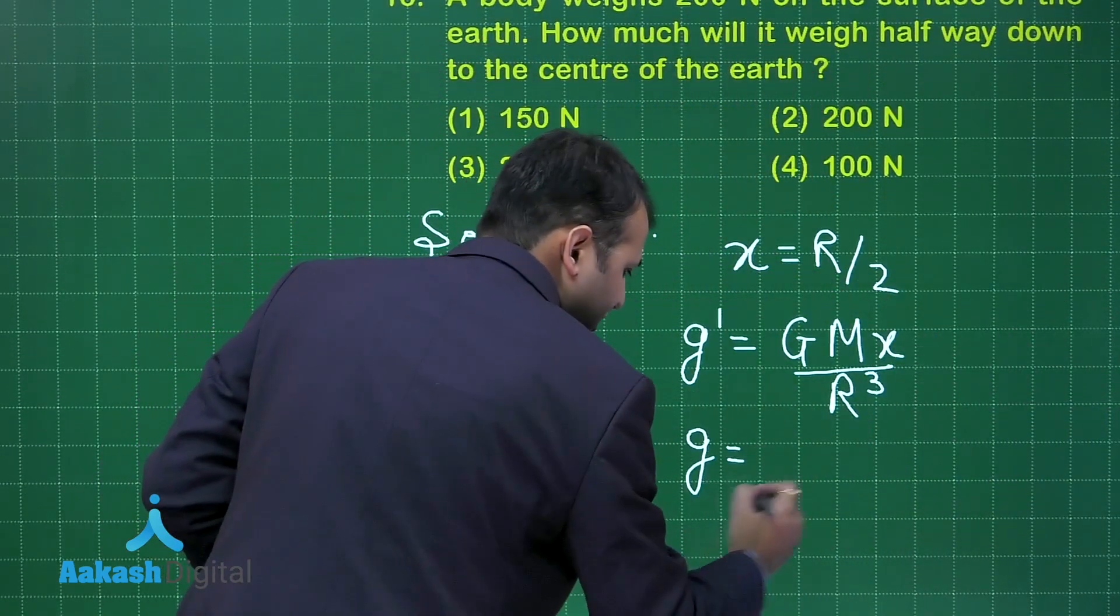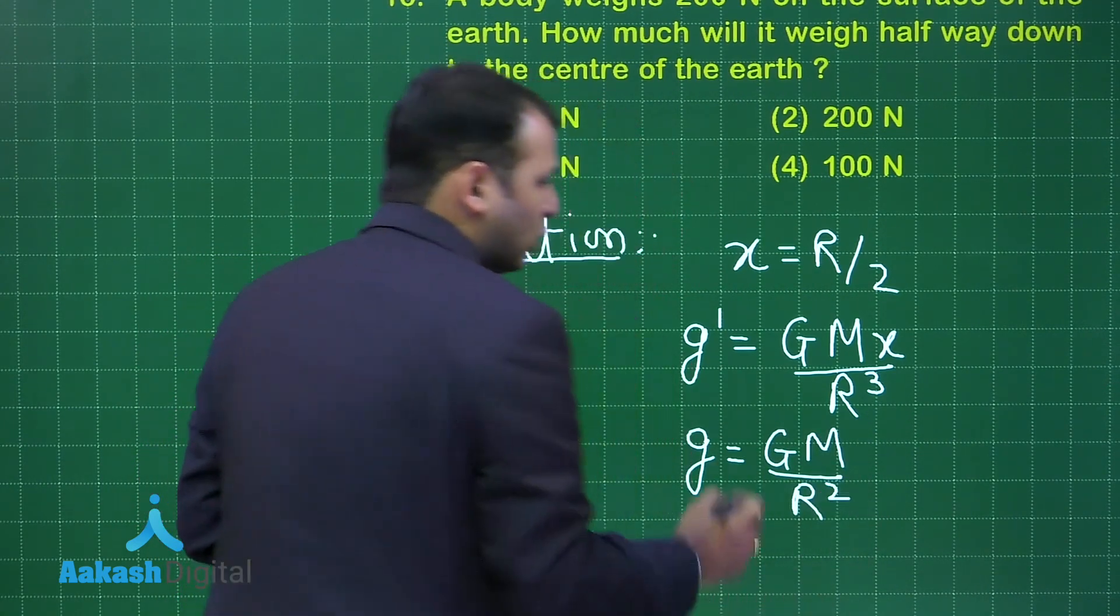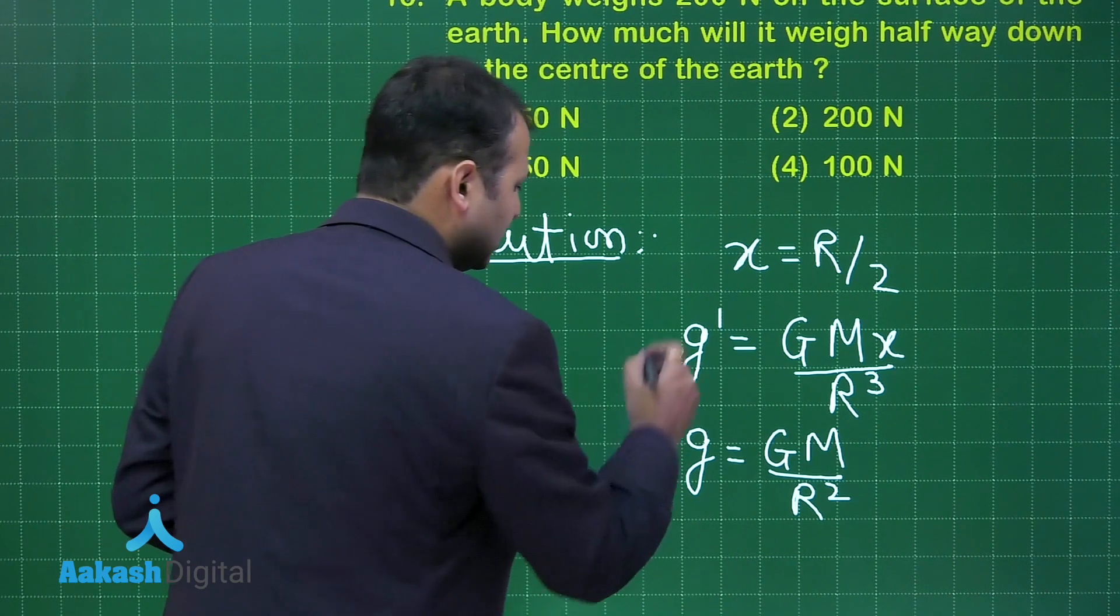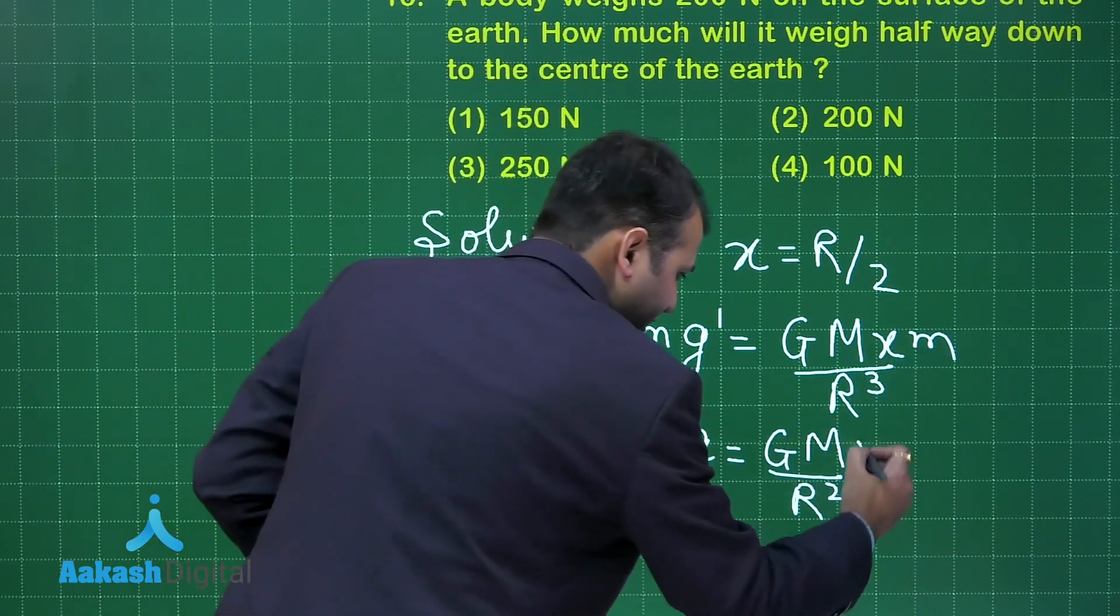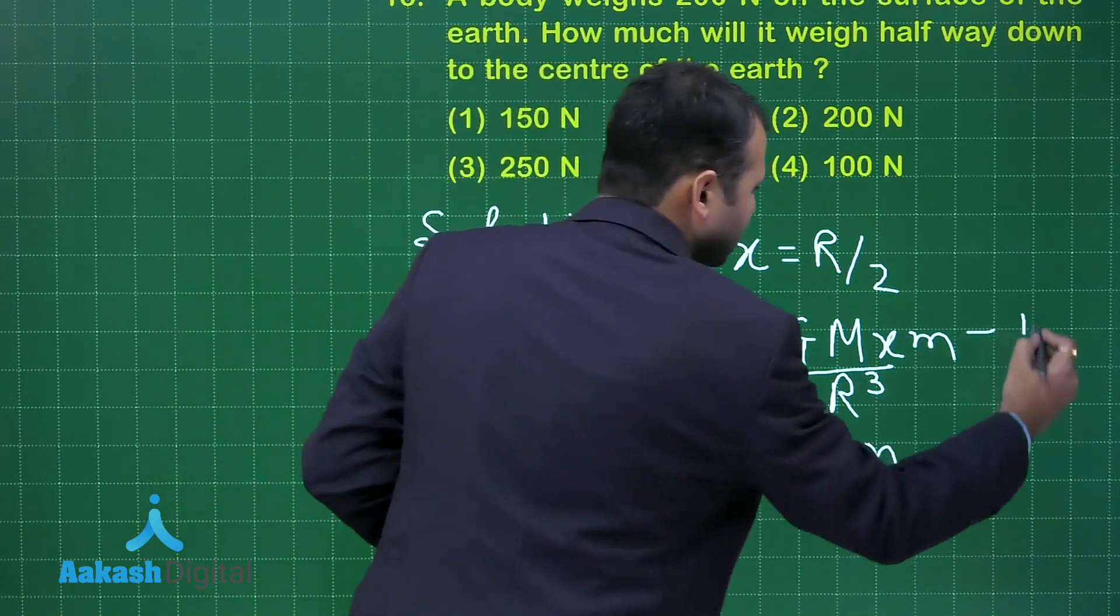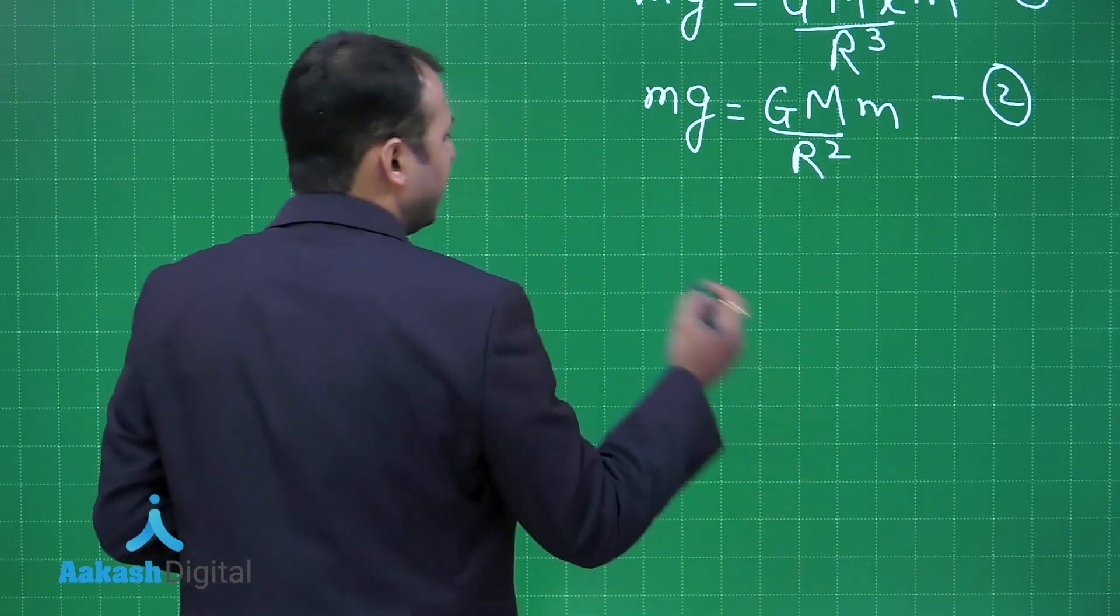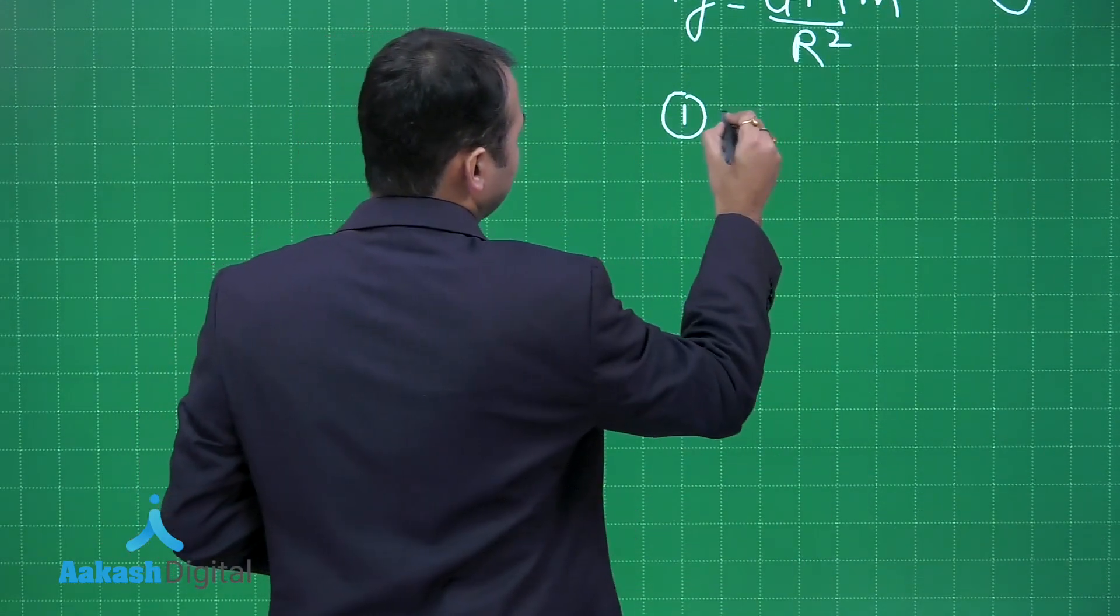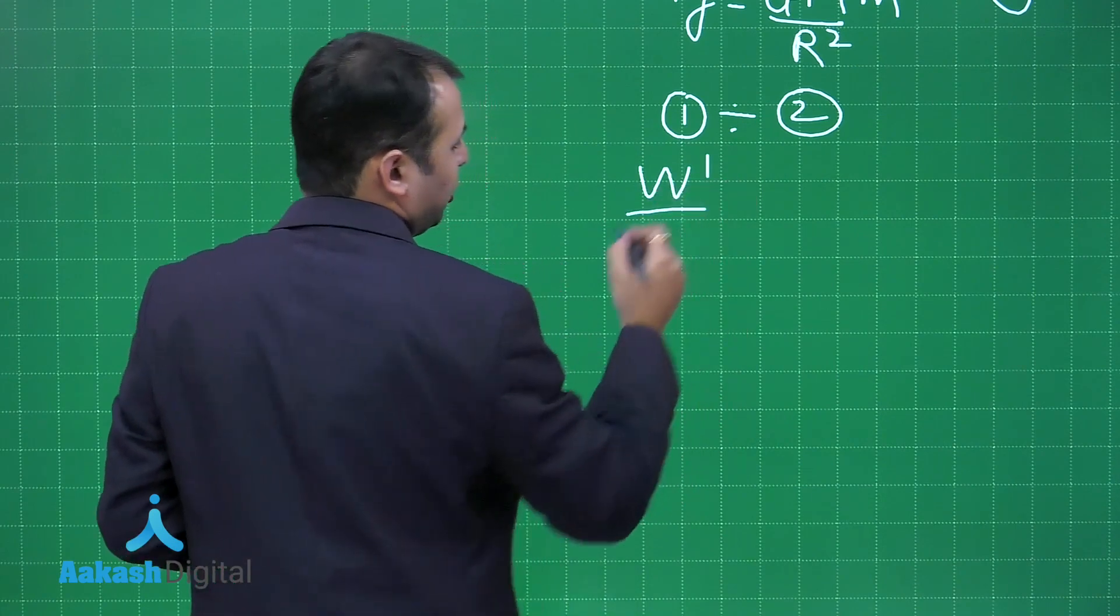And G at the surface of Earth would be GM by R square. If you talk about the weight of the body, we have to just multiply the mass of the body here and here and here. Now these are the two equations. This is first and this is the second equation. Let's take the ratio. Taking the ratio of 1 is to 2, you will get weight of the body at the new point divided by weight of the body at the surface.